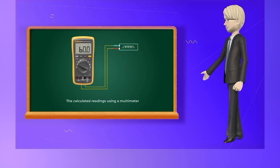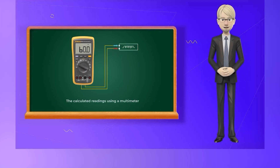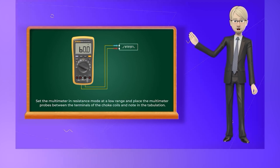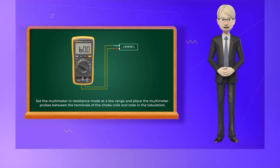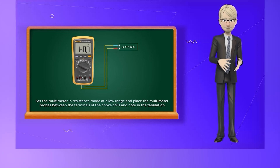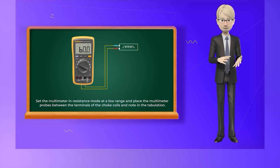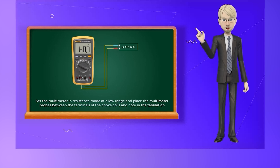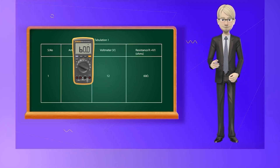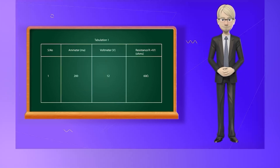You can also verify the calculated readings using a multimeter. Set the multimeter in resistance mode at a low range and place the multimeter probes between the terminals of the choke coil. Ensure both resistance value readings are equal.